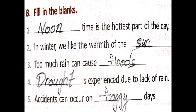Section B Roman: fill in the blanks. First one — blank times is the hottest part of the day. Answer: noon. Second one — in winter, we like the warmth of the blank. Answer: sun. Third one — too much rain can cause blank. Answer: floods.